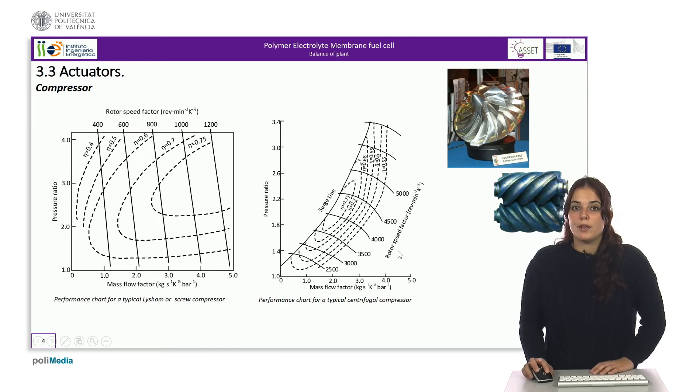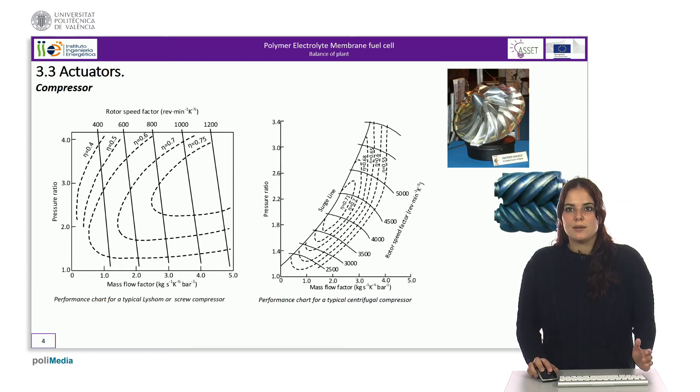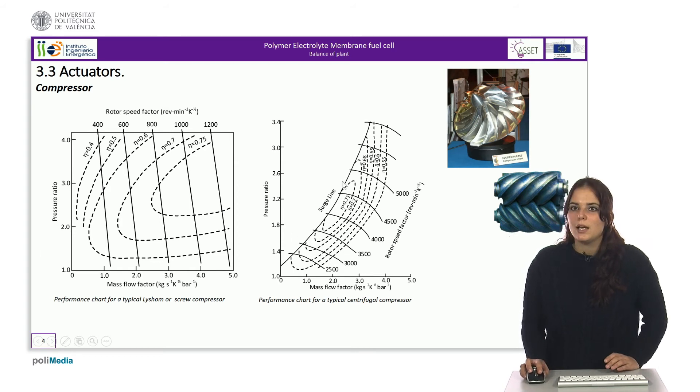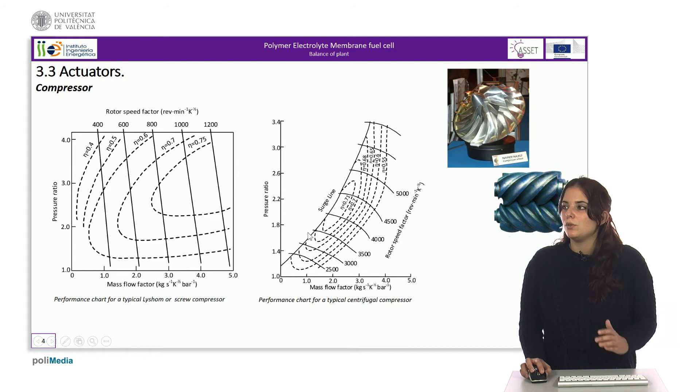The graph on the right shows the operating curve of a centrifugal compressor. Unlike the Leeson, this compressor has a zone of instability above the surge line, so these are operating points that should not occur.